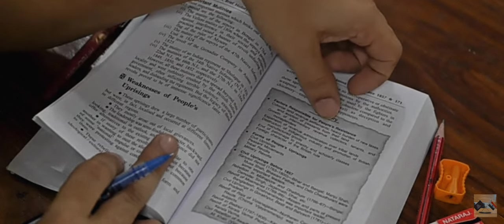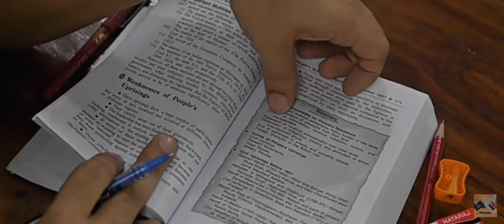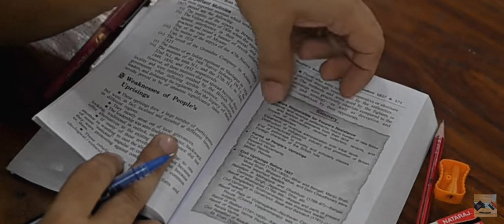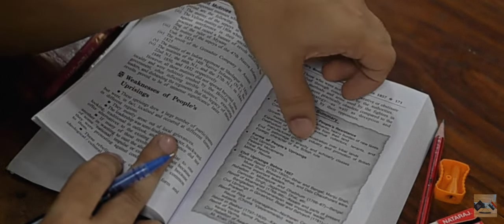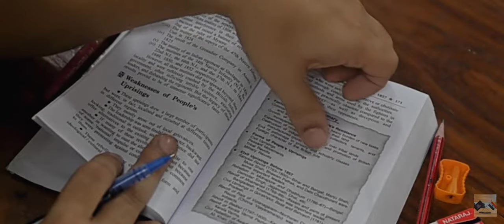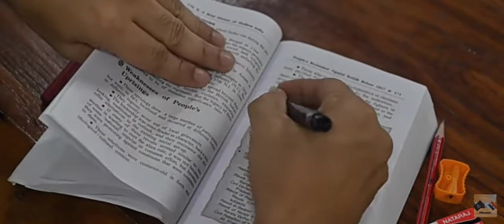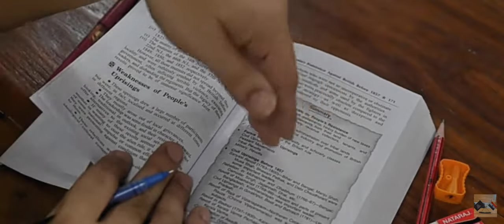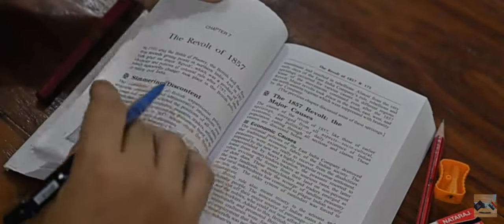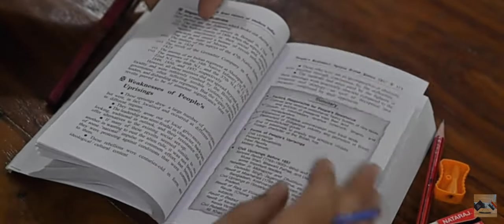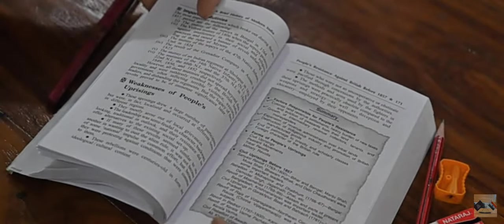Here the summary of the chapter is given where they have given factors responsible for people's resistance. What were the reasons why people's resistance was there against the British? They have given the reasons: colonial land revenue settlements, growth of intermediary revenue collectors, end of patronage of priestly and scholarly classes, foreign character of the British rule. All these are the different reasons. Of course you need to know these because only then you will understand what is going on in the chapter. So if you just quickly read this, it's only two pages, it will take you 10 minutes to read. Even if you don't know anything about this chapter, it will help you to read the chapter better.